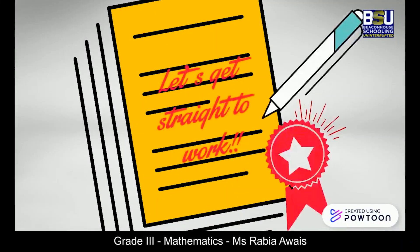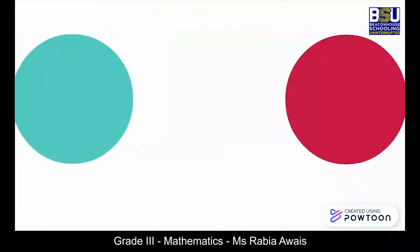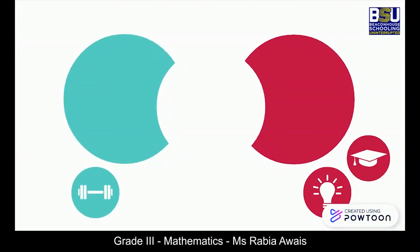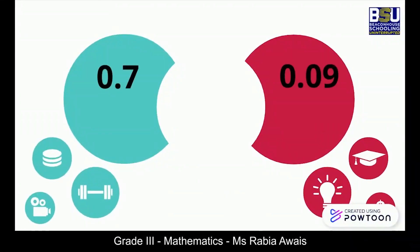Here are two numbers: 0.7 and 0.09. We are going to start looking at each of the digits, starting with the leftmost digit. In this case, the leftmost digit is in the ones place. We always compare one place of one number with one place of the other number. Both numbers have zero in the ones place.